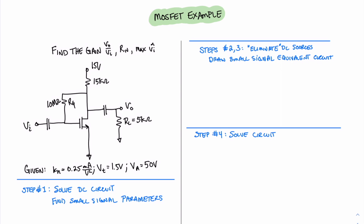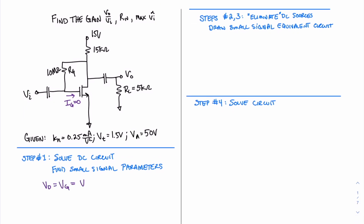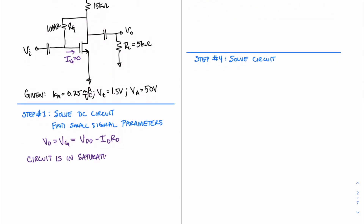One of the things to always remember about a MOSFET is that the gate current is zero. Practically, that means the voltage at the drain is equal to the voltage at the gate, and we can write an equation for that voltage as VDD minus ID times RD. If the voltage at the drain is equal to the voltage at the gate, then we can say that this circuit is definitely in saturation. No matter what voltage we have, if it's the same as the voltage at the gate, the condition that VGS minus the threshold voltage must be smaller than VDS is always satisfied for any value of VT larger than zero. So we know that the circuit is in saturation.